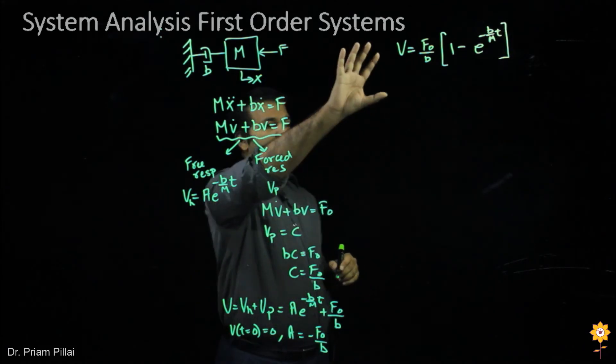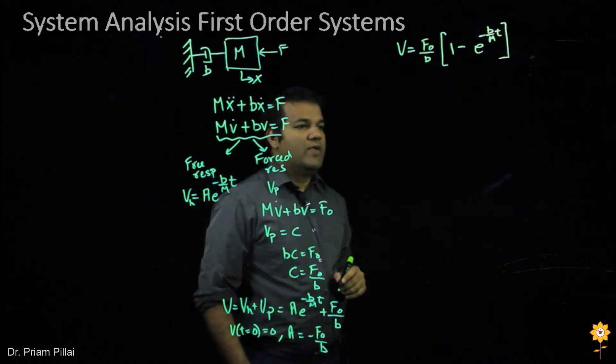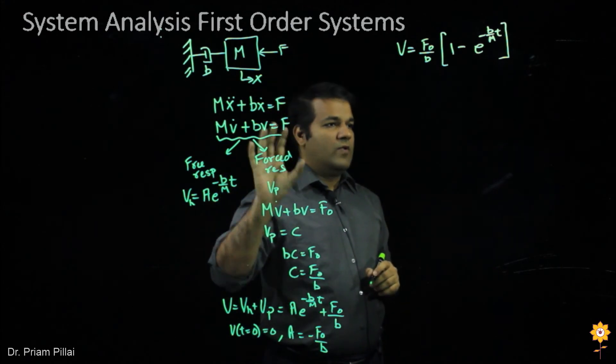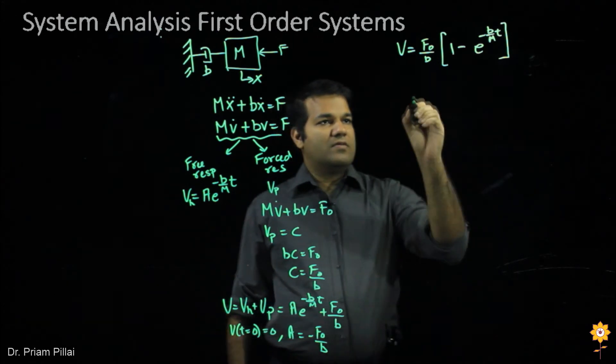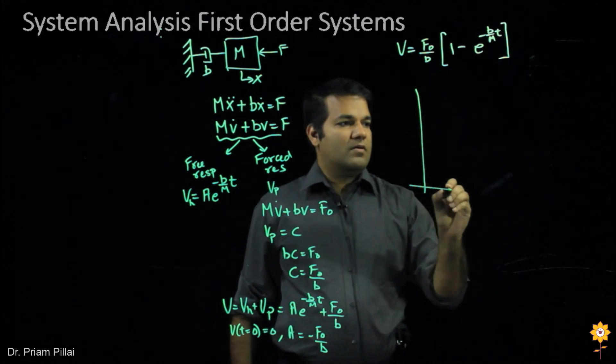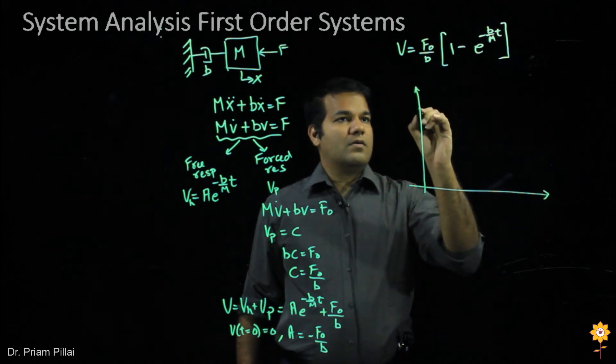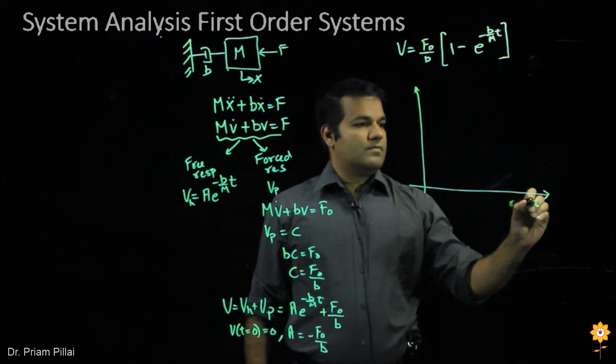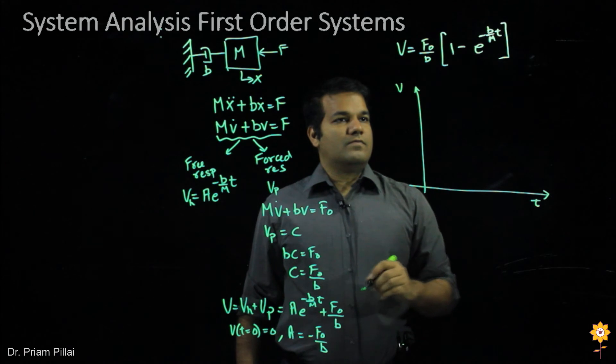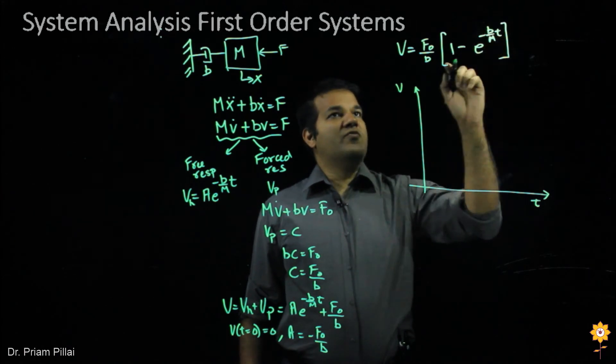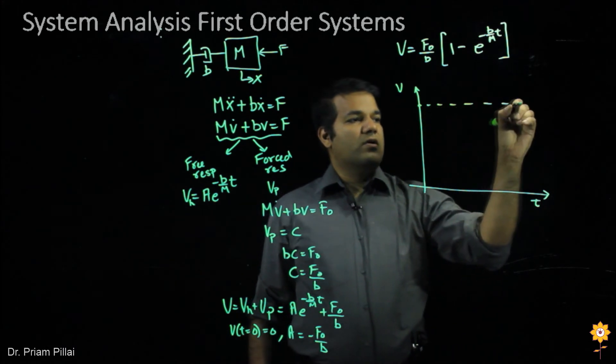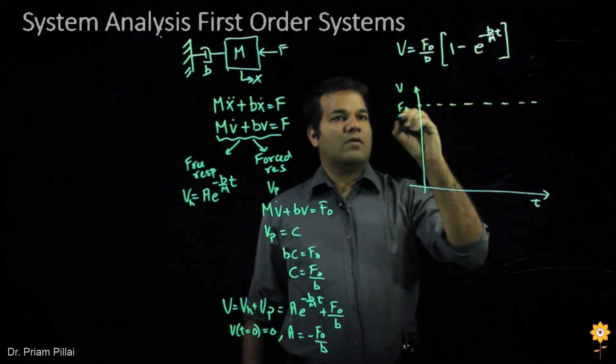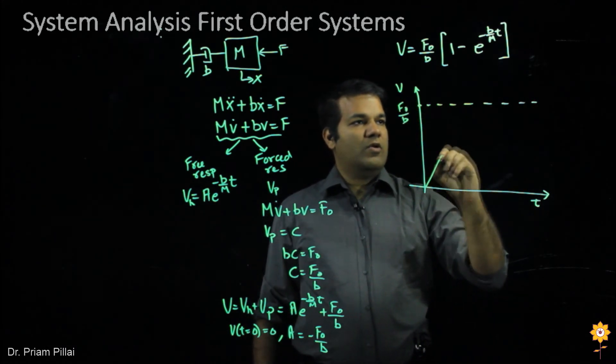So this is the full response, the combination of the forced as well as free response of this system. Let's try to graph this to see what it looks like. As t goes to infinity, v would approach f0 over b. And this would slowly rise like that.